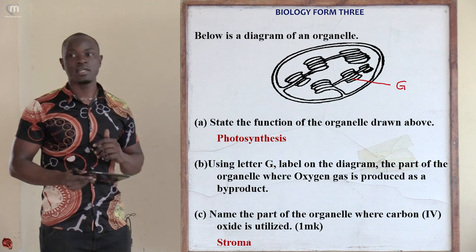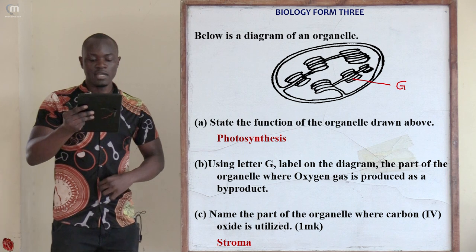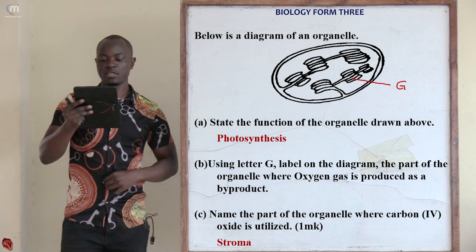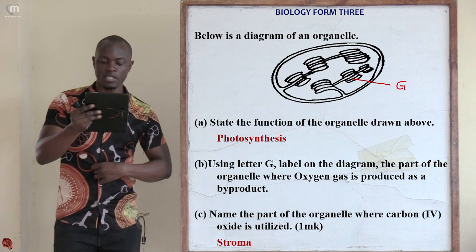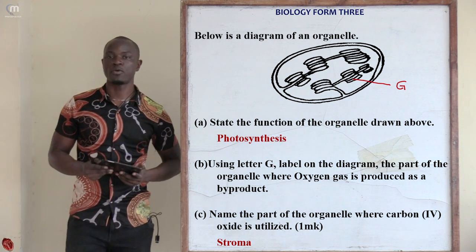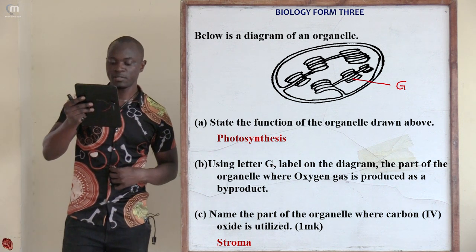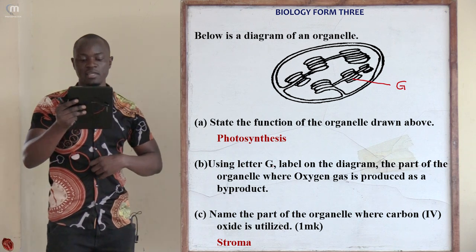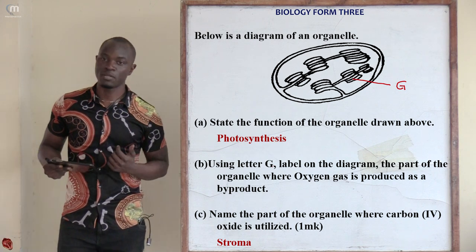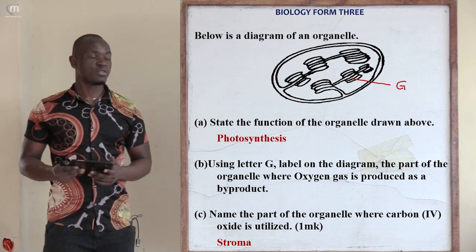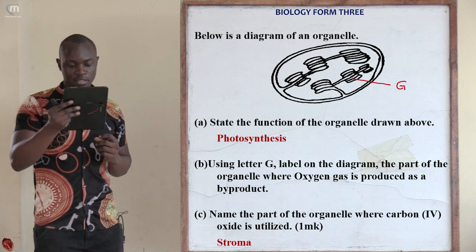This organelle is a chloroplast. Using letter G, label the part where oxygen gas is produced as a byproduct — that is in the grana (the stacked coin-like structures). The part where carbon dioxide is utilized is the stroma — carbon dioxide is utilized in the stroma.